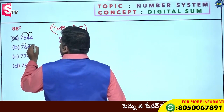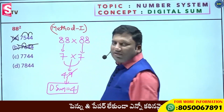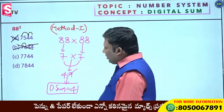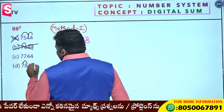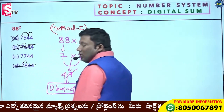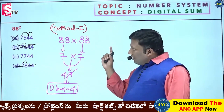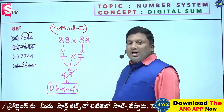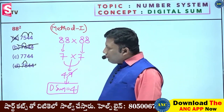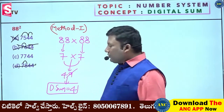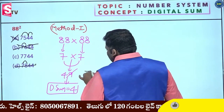7 plus 8 is 15, 15 plus 8 is 23, 2 plus 3 is 5. The question's digital sum and the answer's digital sum should be the same. Only one option has the same digital sum, so the answer is 7744.